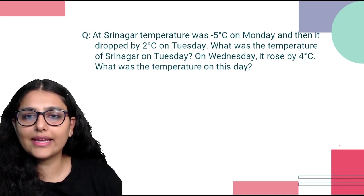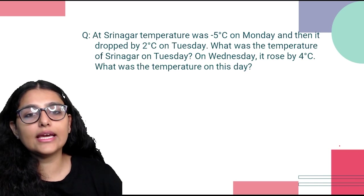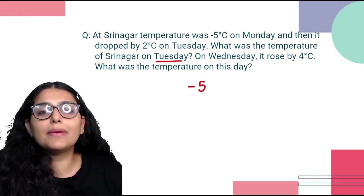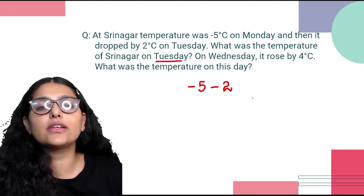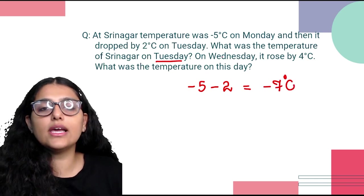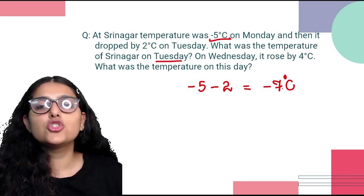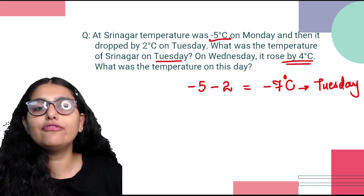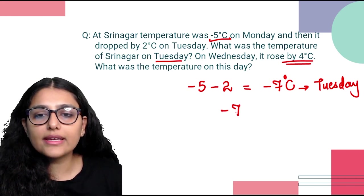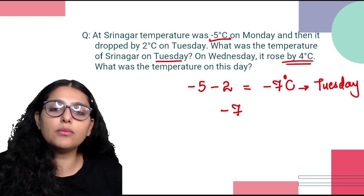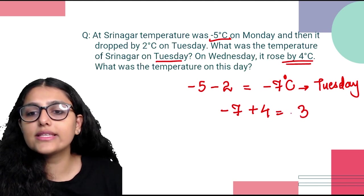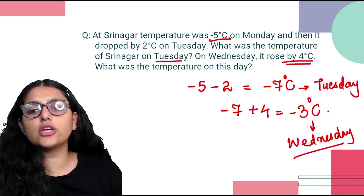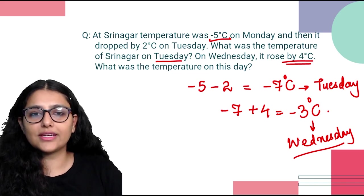At Srinagar, the temperature was minus 5°C on Monday. It dropped by 2 degrees on Tuesday, so Tuesday's temperature = minus 5 minus 2 = minus 7°C. On Wednesday, it rose by 4 degrees, so Wednesday's temperature = minus 7 + 4. Plus minus = minus → 7 minus 4 → larger number is 7 with negative sign → answer is minus 3°C on Wednesday.